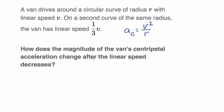All right, now let's work through this together. Let's first think about the first curve. The magnitude of our centripetal acceleration for curve one — they tell us that our linear speed is v, so we're going to have v squared over r. So it's just going to be v squared over r for that first curve — the magnitude of our centripetal acceleration.